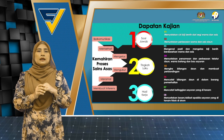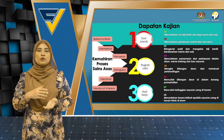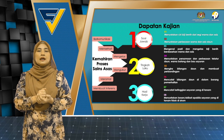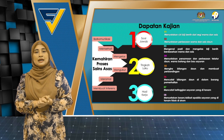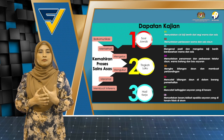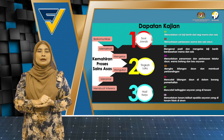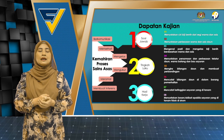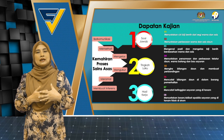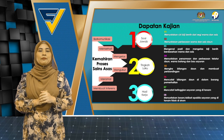Contohnya tuan-puan, dalam soal jawab, kanak-kanak ini dapat menyatakan ciri biji benih dari segi warna dan saiz, menyatakan perbezaan warna dan saiz daun, mengenal pasti dan mengelas biji benih berdasarkan warna dan juga saiz, menyatakan persamaan dan perbezaan tekstur daun, warna batang dan juga bau sayuran. Selain itu, kemahiran proses sains ini juga berlaku apabila kanak-kanak dapat mengira bilangan daun dan membuat perbandingan, mencatat bilangan daun di dalam borang pemerhatian, mencatat ketinggian sayuran yang ditanam, serta menyatakan kesan apabila sayuran yang ditanam tidak disiram.